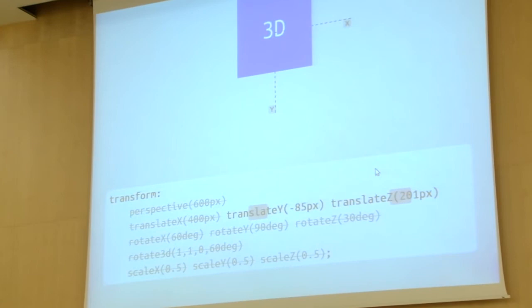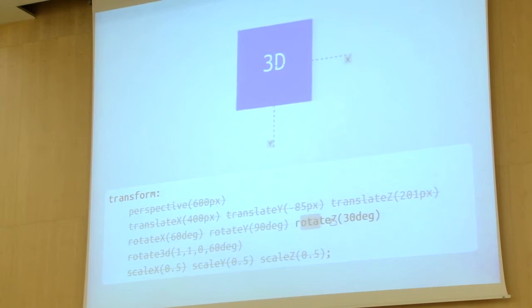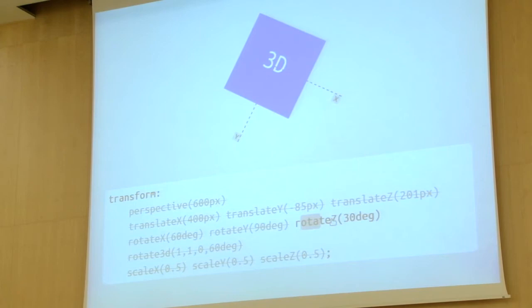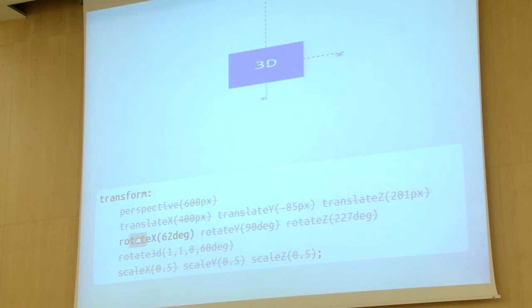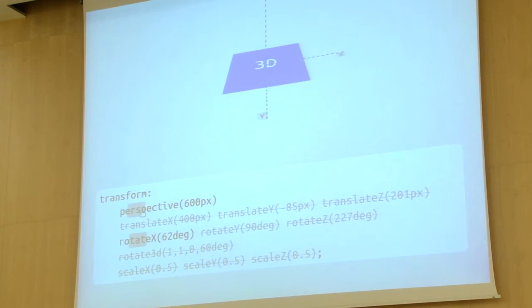But nothing happens actually, so let's try with rotation. RotateZ is exactly the same as the rotate function — it rotates around the Z axis. We can also rotate around the X axis and the Z axis appears, and the element kind of rotates, but it doesn't feel like it's in 3D. The thing we are missing is perspective. That's a new transform function that gives us the real 3D look of our transforms, because perspective is really essential for the 3D effect.